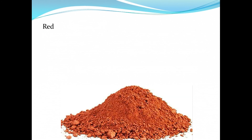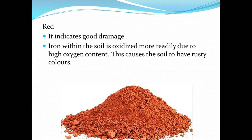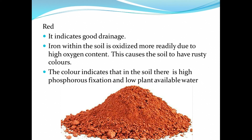Now let's look at what the red color tells us about the soil. It indicates good drainage — iron within the soil is oxidized more readily due to high oxygen content, causing the soil to have rusty colors. If the soil is well drained, oxygen content is high, resulting in oxidation of iron and the red color. Red color also indicates high phosphorus fixation and low plant available water due to high drainage.